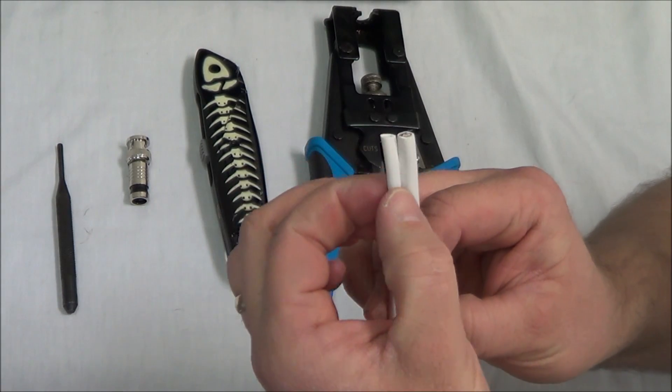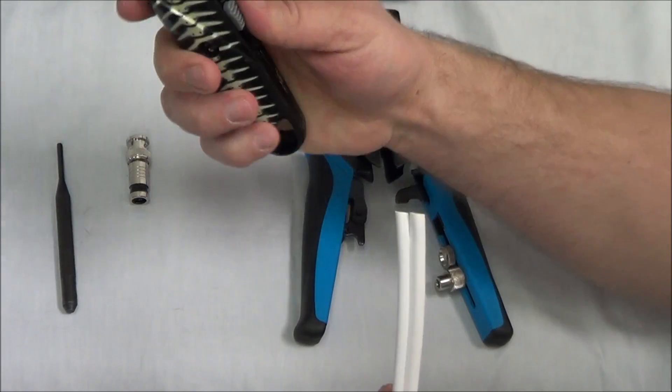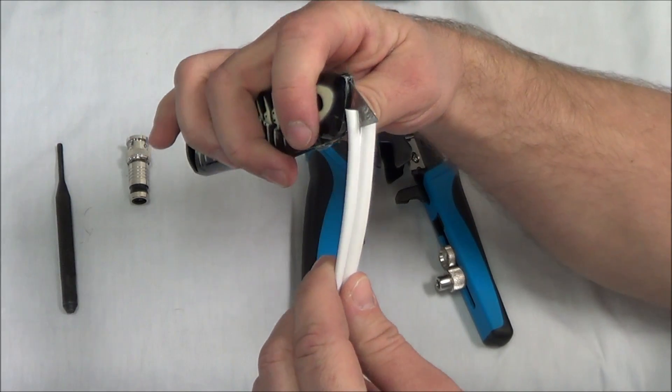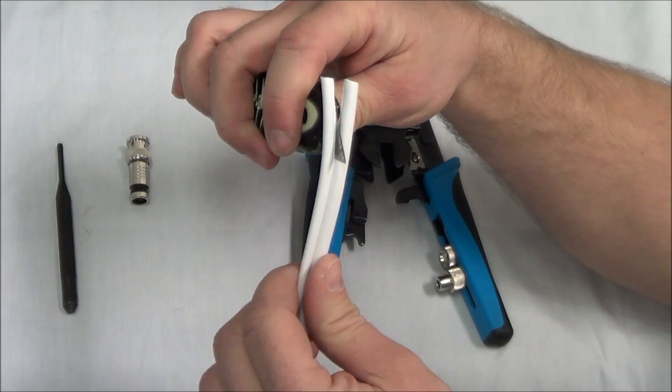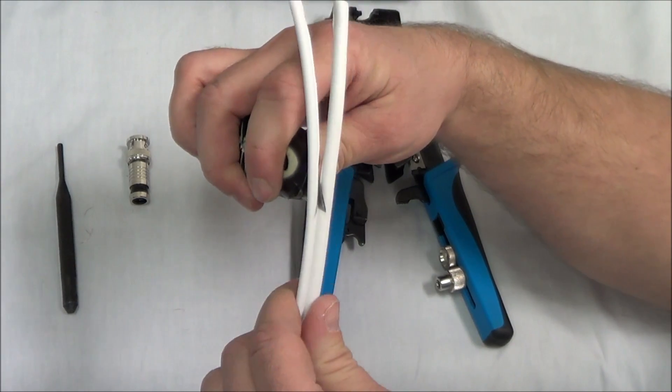The first thing we're going to do is we're just going to split the wires. We'll take our utility knife and we're just going to separate them and just focus on the video cable.